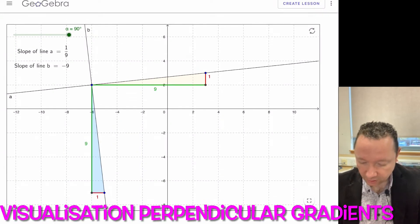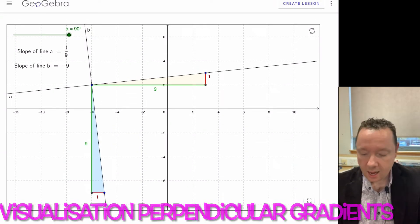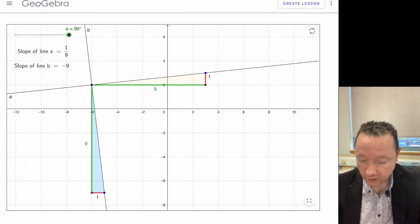So looking at this app here, you can see I've drawn two lines and the gradient of the first line is one over nine, a ninth. But if you take the gradient of the other line, you can see that the gradient is minus nine over one, or minus nine.